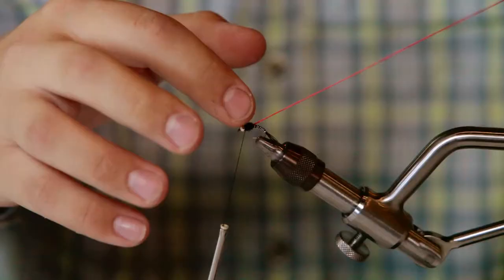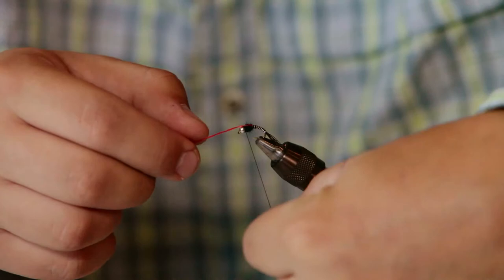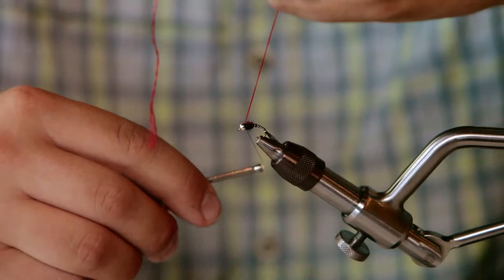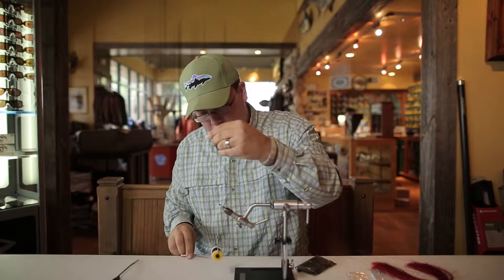Now that my thorax is dubbed in with that rabbit dubbing, I'm going to take my wing case or the floss and fold it over, and I'm going to tie that off as well. So I do two securing wraps on top, and then I pull the floss up, tighten it, and do one in front of it. Once that's done that floss isn't going anywhere, so you can cut it.